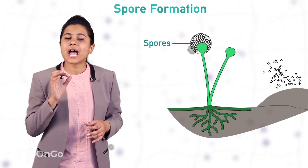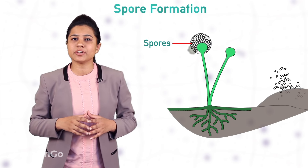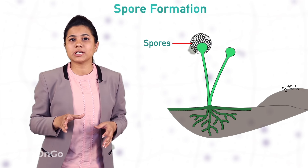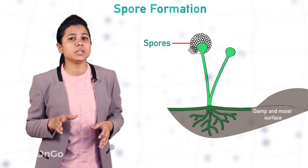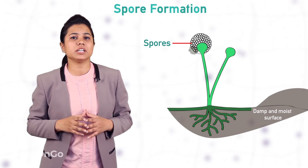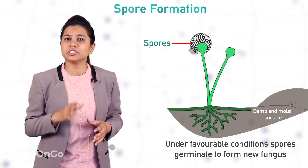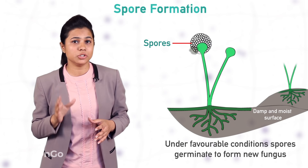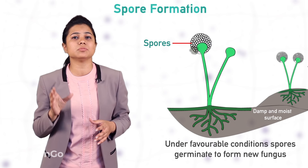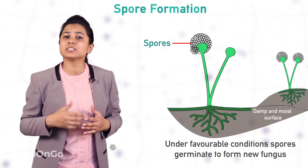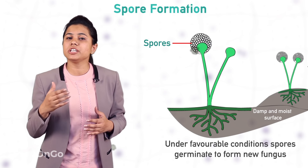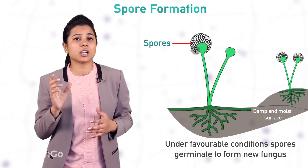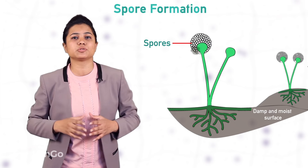When the spores land on soil and conditions are favorable — meaning damp and moist conditions — they germinate and produce a new organism or new fungus. This is how reproduction in bread molds occurs with the help of spores.